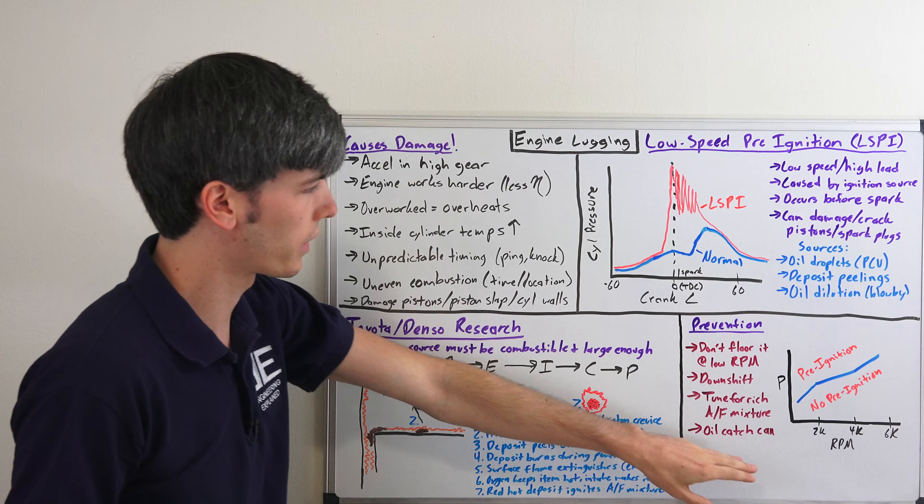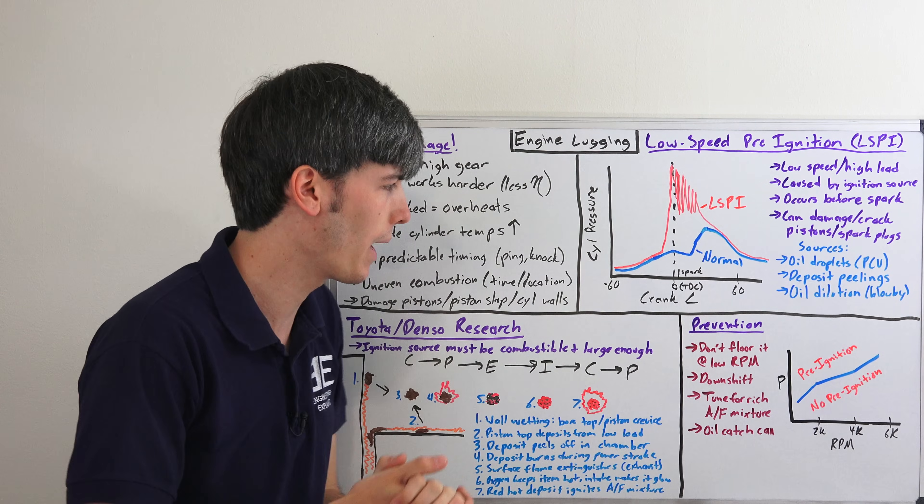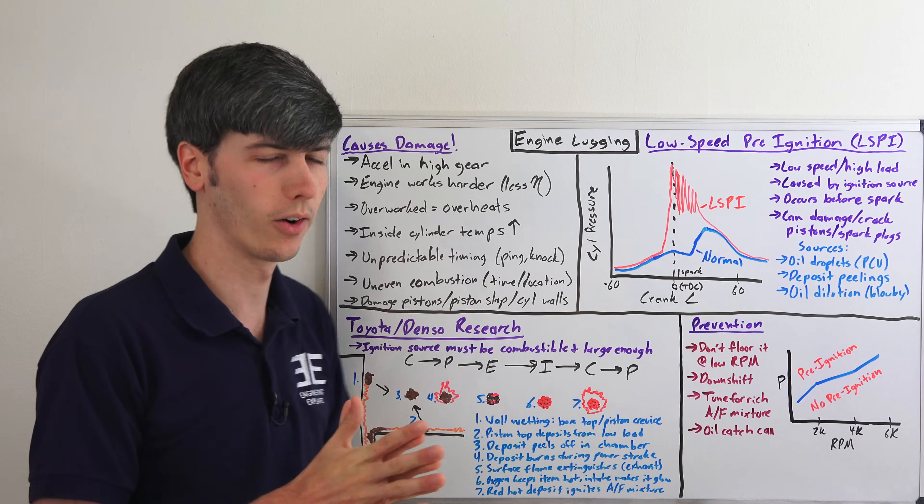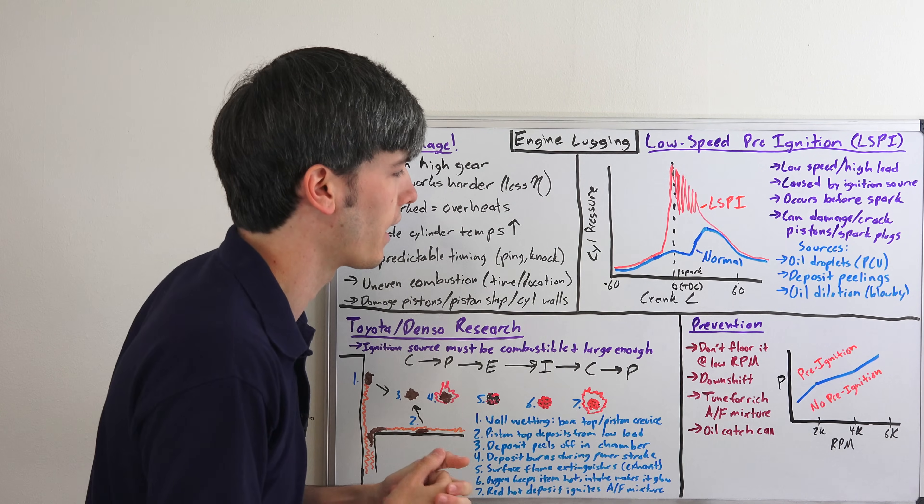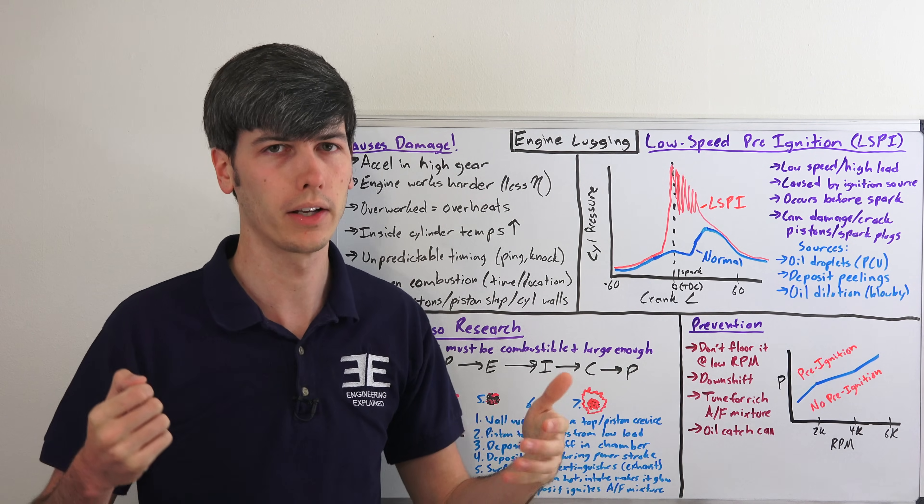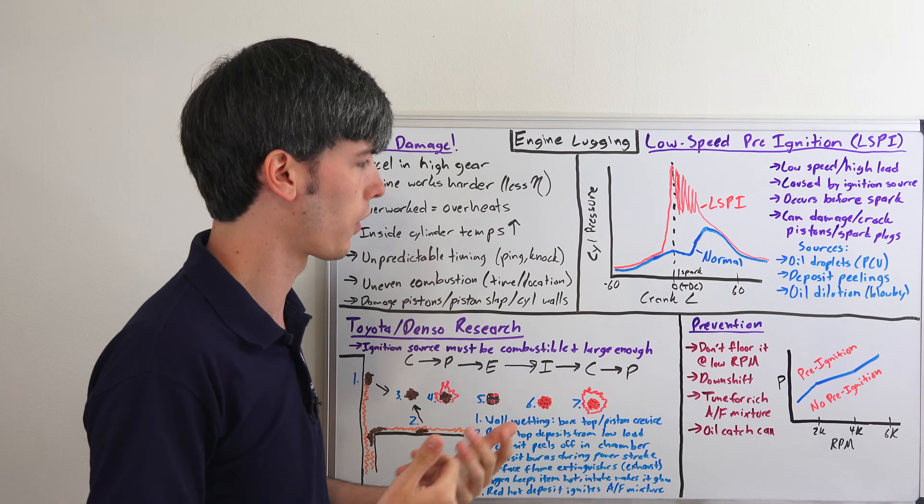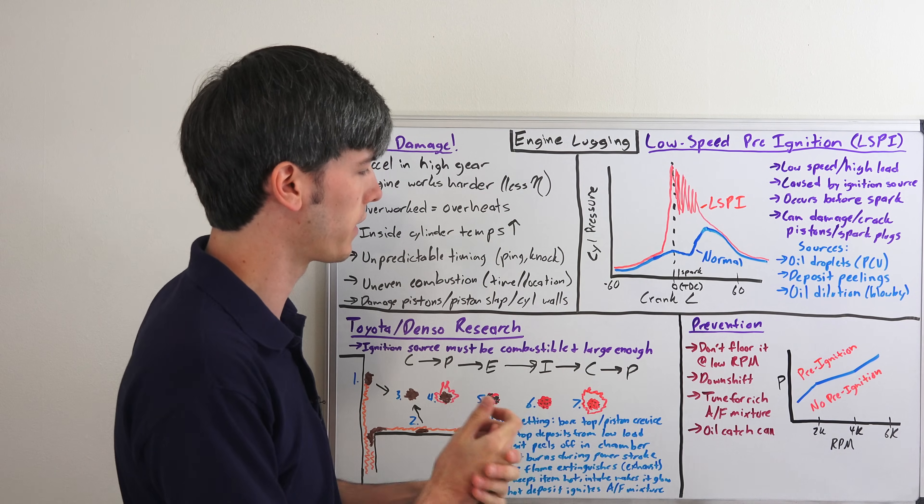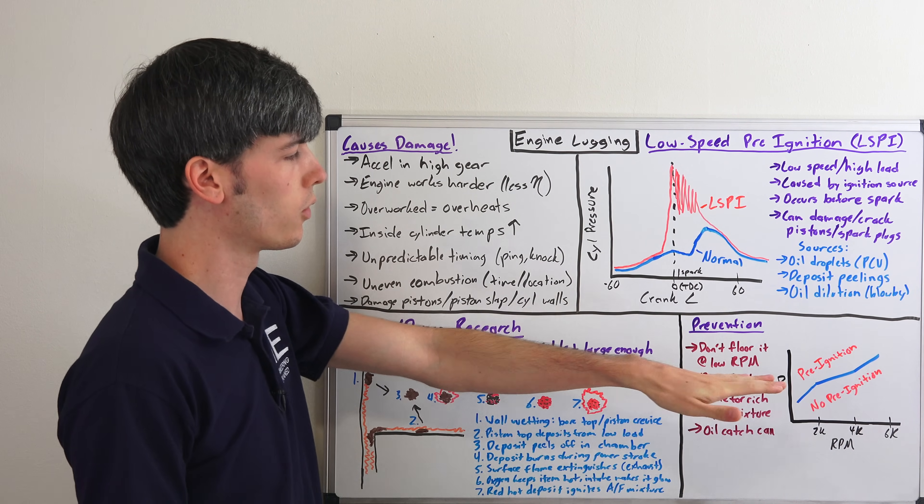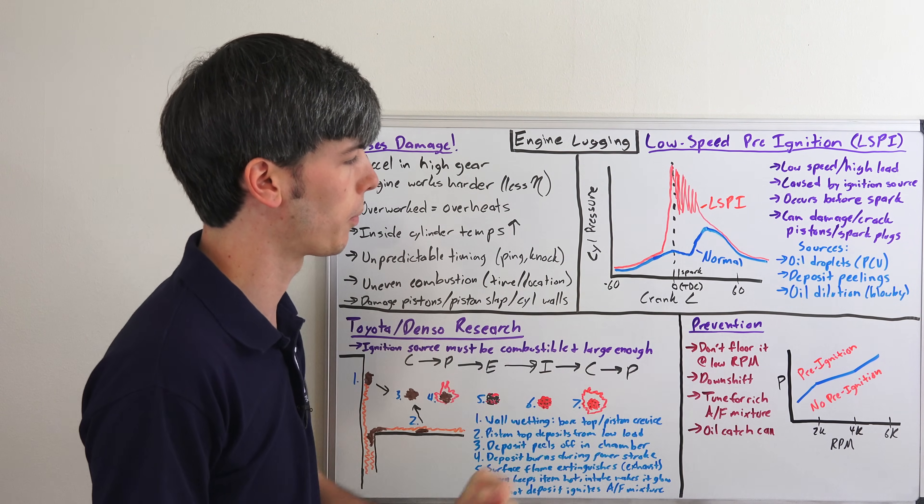One of the last things I want to get into here is how do you prevent this from happening? The easiest scenario is to just not floor it when you're at low engine RPMs. If you're at sixth gear at 40 miles an hour, downshift into fourth maybe or third if you need to accelerate, fifth if you don't need to accelerate that hard.